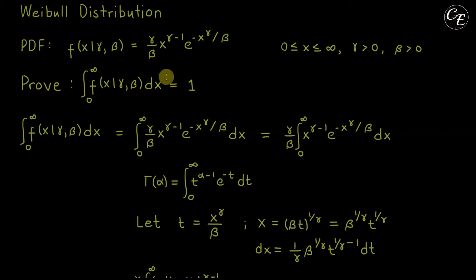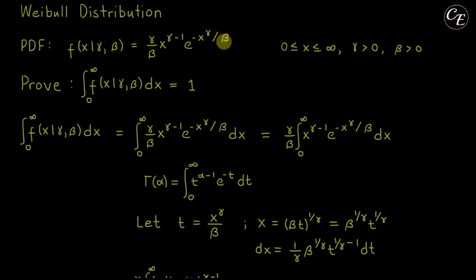To introduce this Weibull distribution: it is a continuous probability distribution with the probability density function (PDF) given by gamma over beta, times x raised to gamma minus 1, times e raised to negative x raised to gamma over beta. The domain x is defined from 0 to infinity, the parameter gamma is greater than 0, and the parameter beta is greater than 0.